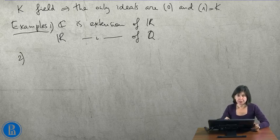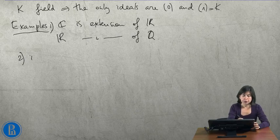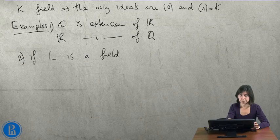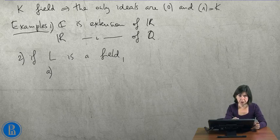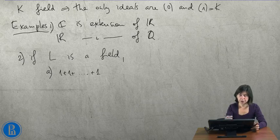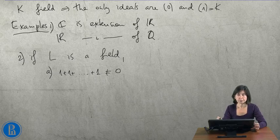Any field has what is called a characteristic. So, if L is a field, there are two possibilities. Either if you take the unit element and start adding it to itself, you never obtain 0. In this case, we see that the characteristic of K is 0.